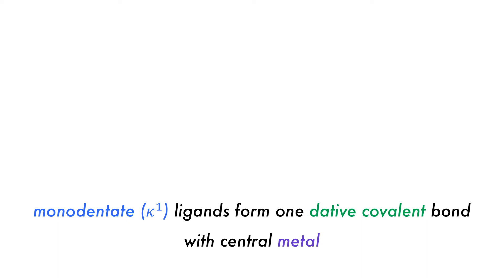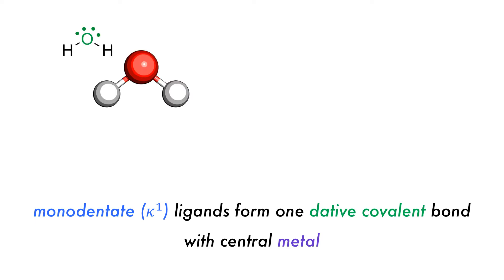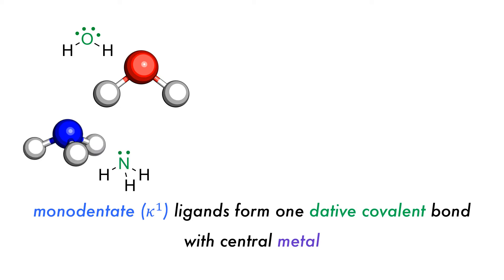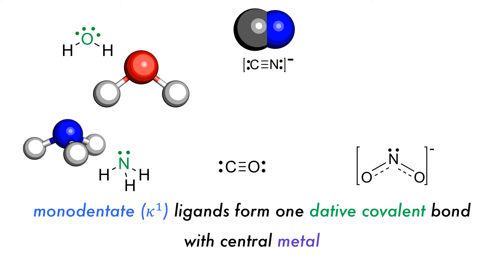The simplest ligand is the monodentate ligand, which only forms one dative covalent bond with the central atom. Some common monodentate ligands are water, ammonia, carbonyl, nitrite, cyanide, phosphines, and pyridine, among others.